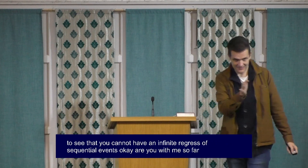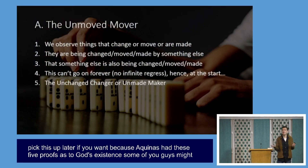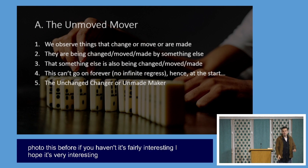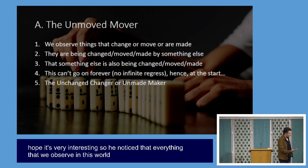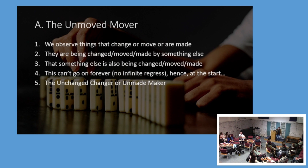Aquinas had five proofs of God's existence. He noticed that everything we observe in this world changes, moves, or is created. You've moved, you've changed — you might have put on weight, lost weight, your hair's gone grey, or if you're young you might have grown taller. Everything changes and moves and is made, and everything that moves or is changed or is made has been moved or changed or made by something else. The chair is there because someone put it there.